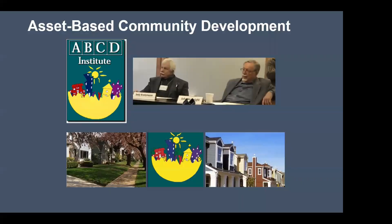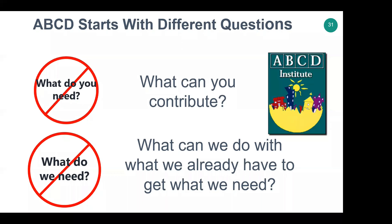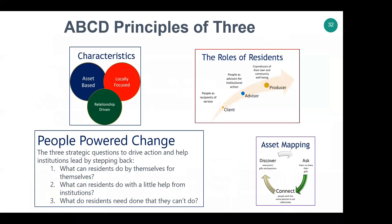The work of ABCD — many of you are probably familiar with the Asset-Based Community Development Institute. The concept and initial book, 'Building Communities from the Inside Out,' was written by John McKnight and Jody Kretzman, founders of the ABCD Institute. I've had the honor of being a faculty member for more than 25 years. With ABCD, we clearly start with different questions: not 'what do you need?' but 'what can you contribute?' — and not 'what do we need?' but 'what can we do with what we already have?' I've developed these ABCD principles of three: the characteristics, the role of residents, the three questions, people power changed, and how to do this through asset mapping.